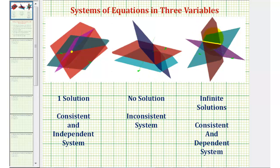The third possibility is there are an infinite number of points on all three planes. Notice the three planes intersect in a line, and there's an infinite number of points on a line. Therefore we have an infinite number of solutions, so we can say the system is consistent and dependent — consistent because it has a solution, and dependent because it has an infinite number of solutions.